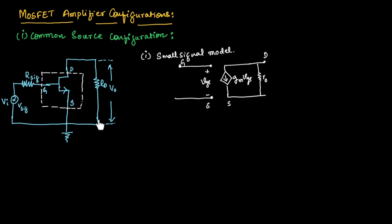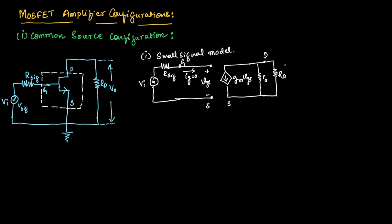We need to connect the other components of the amplifier circuit to this small signal model. At the gate terminal we are having the resistor as well as the input voltage, so we connect R signal and input voltage VI, which in turn is connected to the source terminal. We will assume the gate current IG is equal to zero. At the output side, to the drain terminal, we have connected a resistor that is in turn connected to ground. Across this resistor we can measure the output voltage. This is the small signal model for common source configuration.